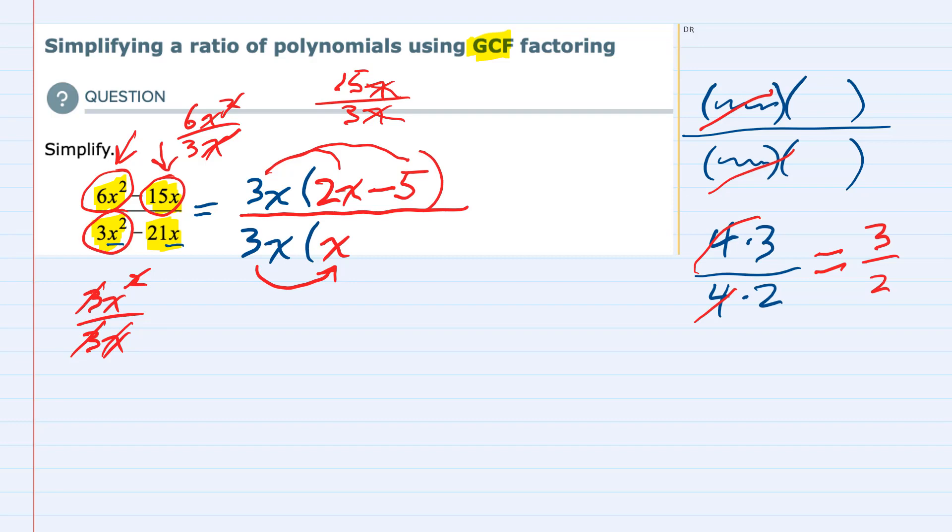Now for the minus 21x, the minus is still there. 21x, I'm factoring out the 3x, so I do the division to see what's left. The x's cancel. 21 divided by 3 is 7. Checking to make sure I didn't make any mistakes, 3x times a minus 7 is minus 21x.